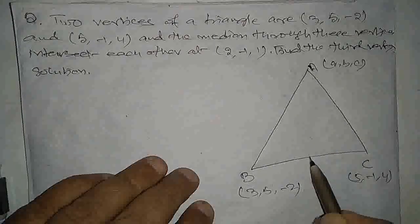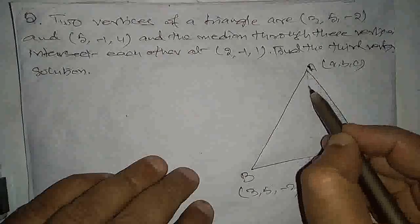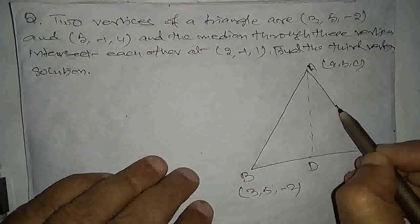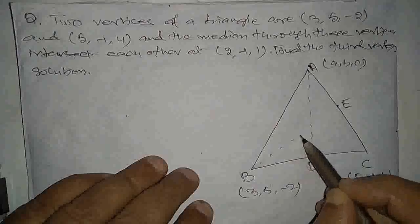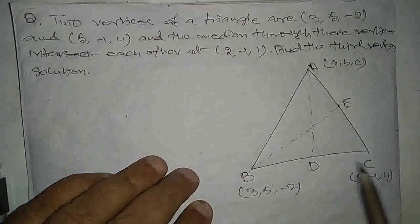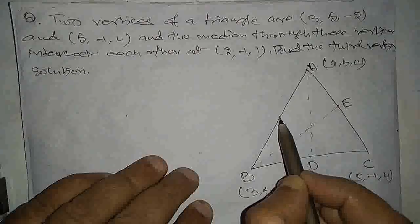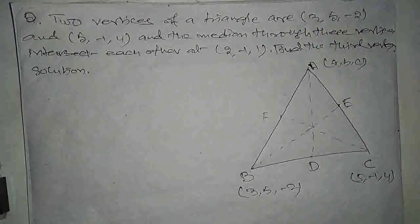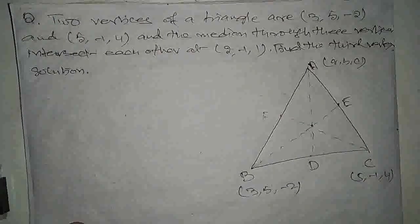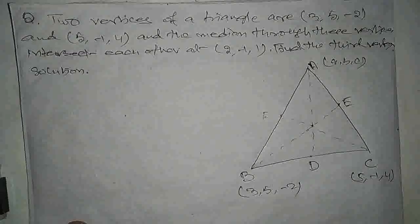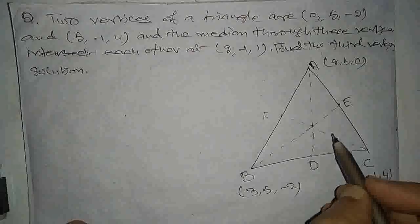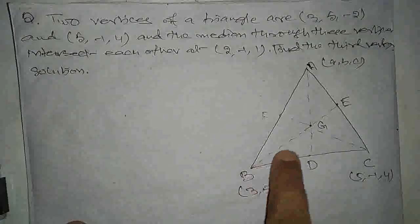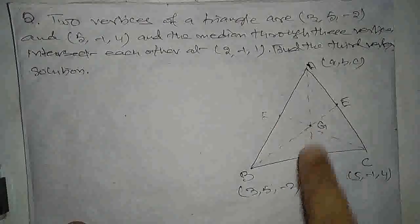A का position B, C का midpoint माल लेते हैं, तो एक median AD होगा। इसका position A, C का midpoint D है। एक median BE होगा जहाँ A, B का midpoint F है। तो एक median CF होगा। तीनों median एक point पर आके मिलते हैं, क्योंकि किसी triangle का median concurrent होता है। इस point को centroid के नाम से जाना जाता है और G से represent किया जाता है। AD median है, BE median है, CF median है — तीनों G पे कट कर रहे हैं।